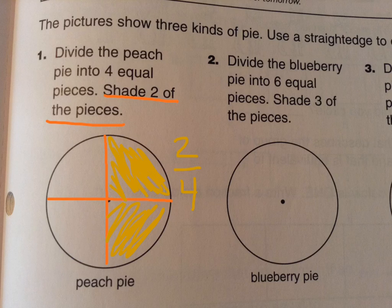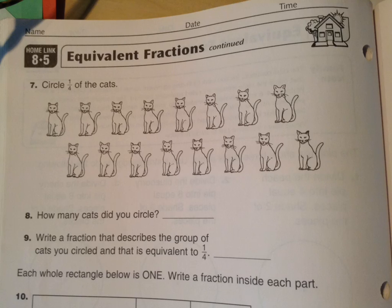Don't forget the homelink tonight has something on the back. So take a look at the back as well. So here it's asking you to circle one-fourth of the cats. That means you need to put them into four equal groups. There's four on the bottom. The denominator means you need to put them in four equal groups. And circle one of those groups.